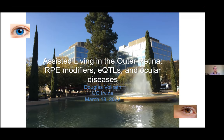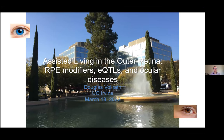Today I'm going to talk briefly about our RP modifier work and then discuss in more detail how it motivated a larger search for eQTLs in the RPE and the implications of those findings for ocular diseases. I'll add a little coda at the end, so don't log off too fast. We are interested in cell interactions in the outer retina, primarily between the photoreceptors and retinal pigment epithelium.